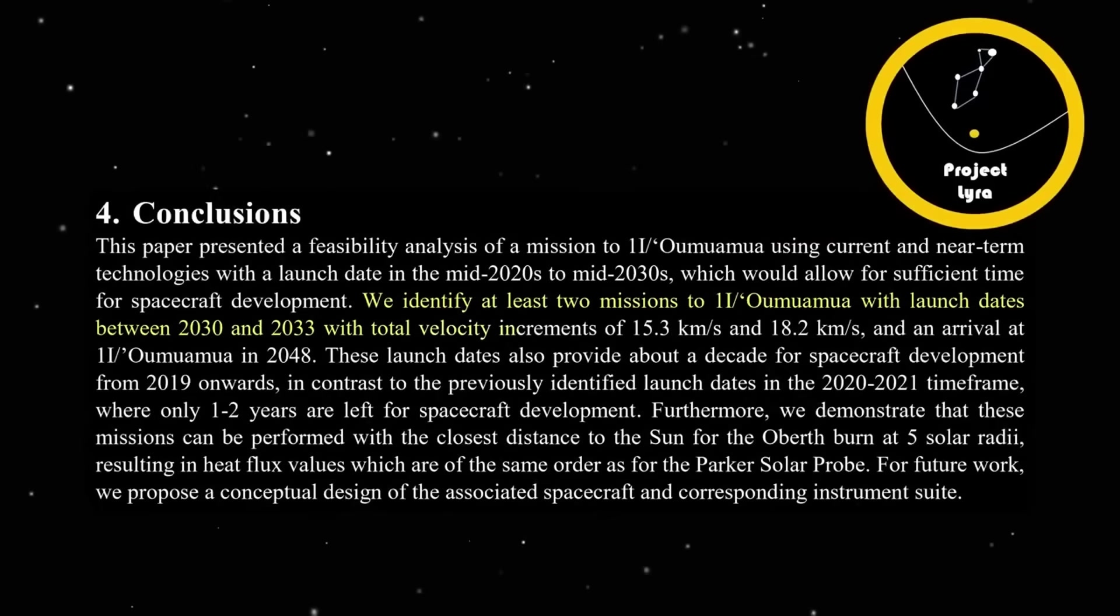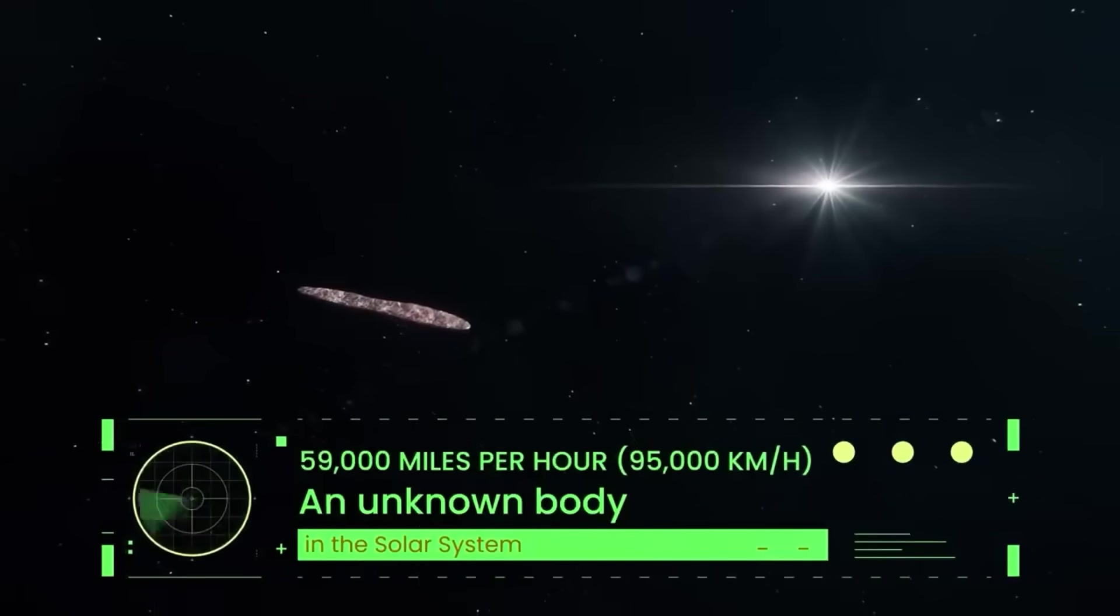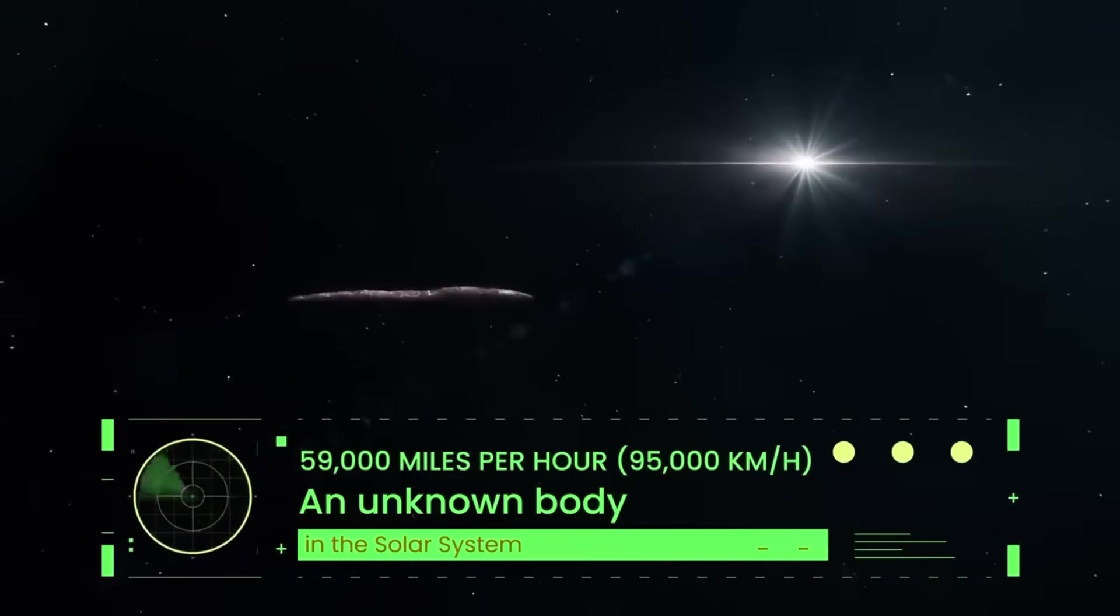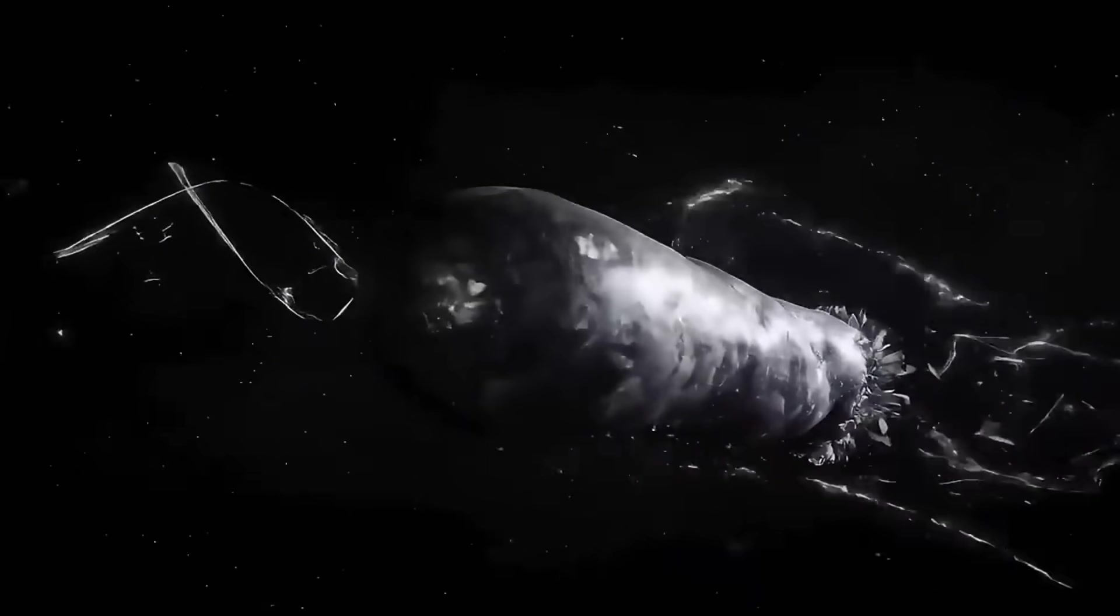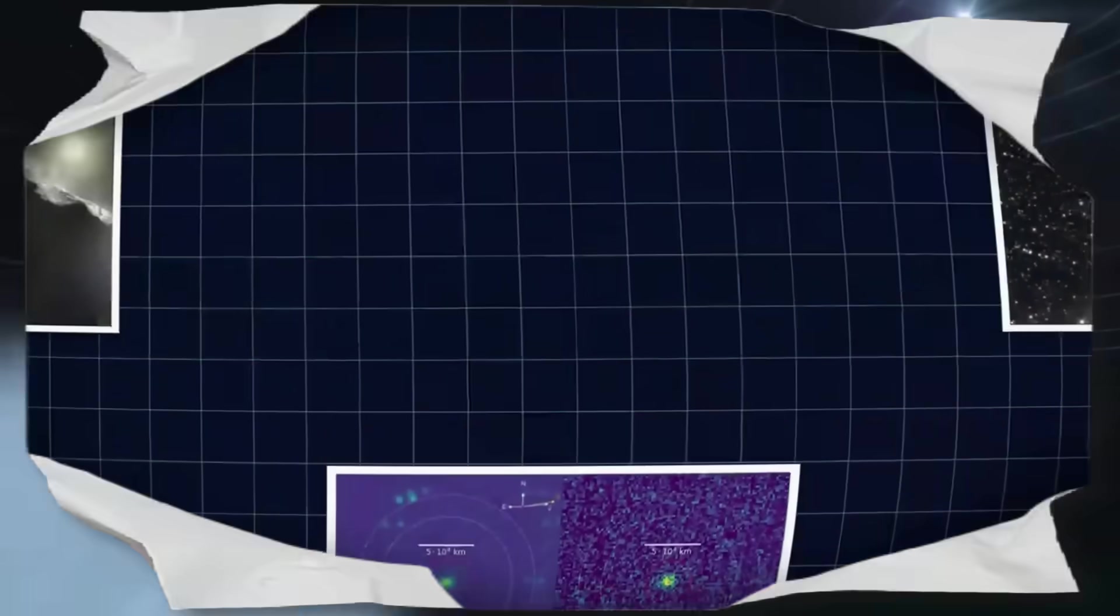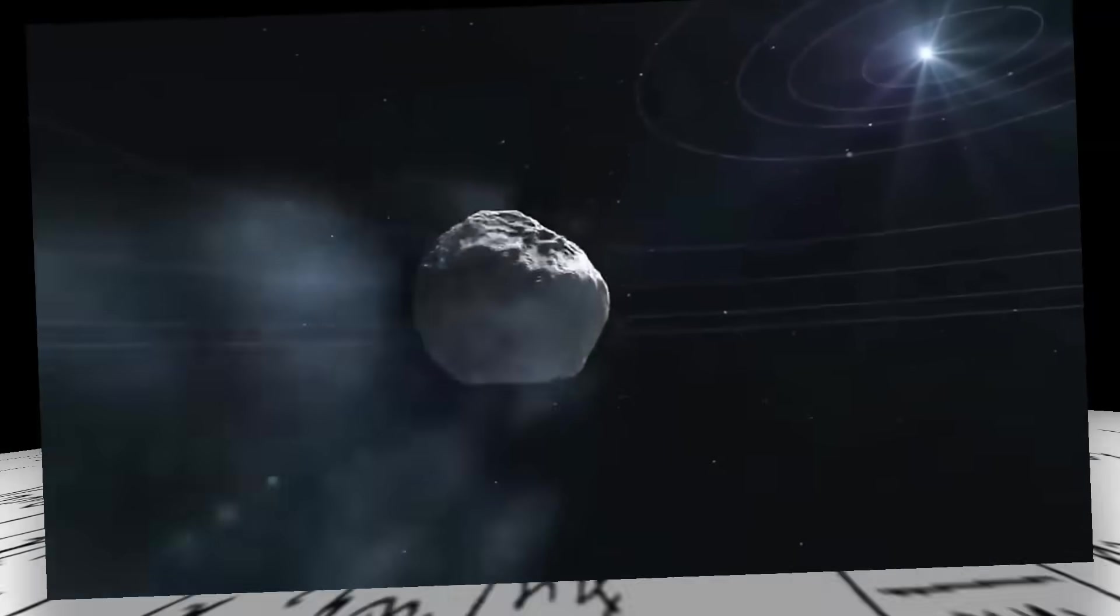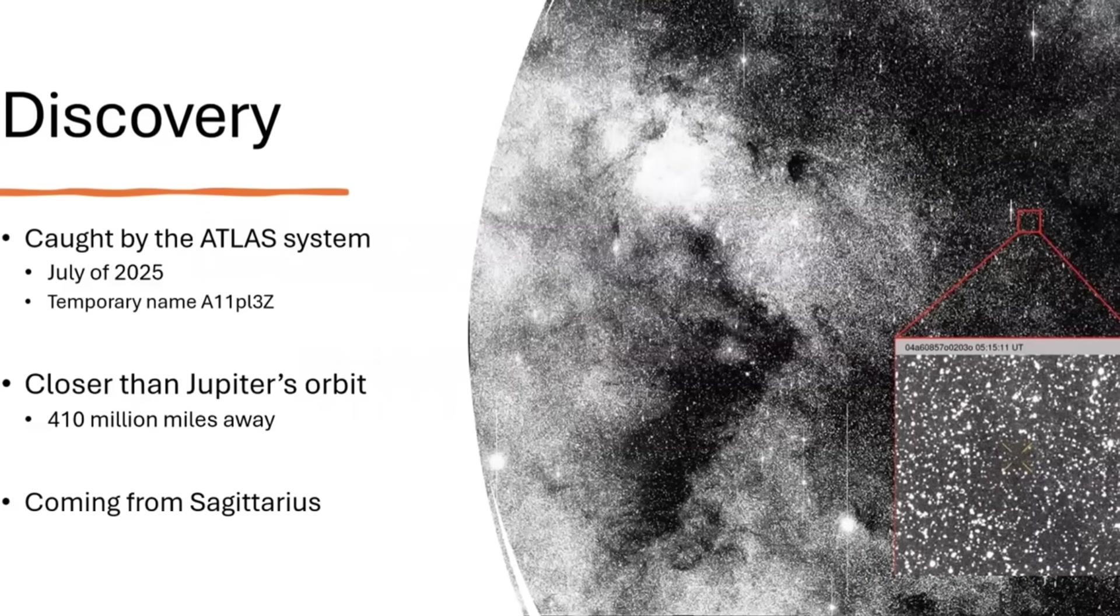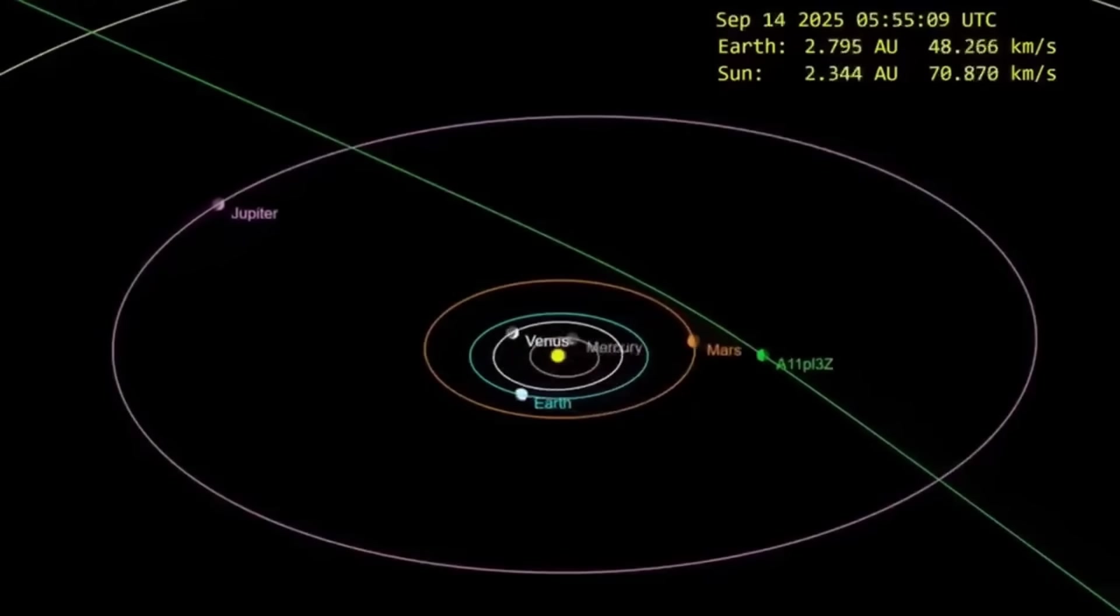Remember, this all started with Michio Kaku's data showing Oumuamua's push wasn't random. That's the thread tying this whole mystery together. The object seemed to be making controlled adjustments, subtle but unmistakable shifts that defied simple explanation. And with 3i/ATLAS now giving us a clear example of how normal interstellar comets behave, Oumuamua stands out even more as something potentially extraordinary.